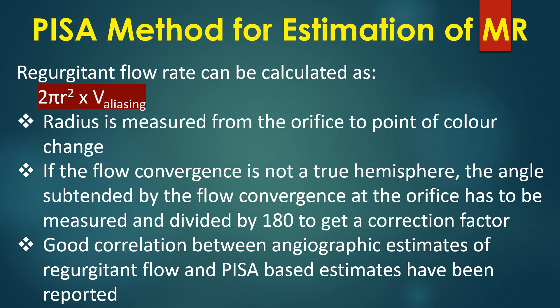If the flow convergence is not a true hemisphere, the angle subtended by the flow convergence at the orifice has to be measured and divided by 180 to obtain a correction factor.